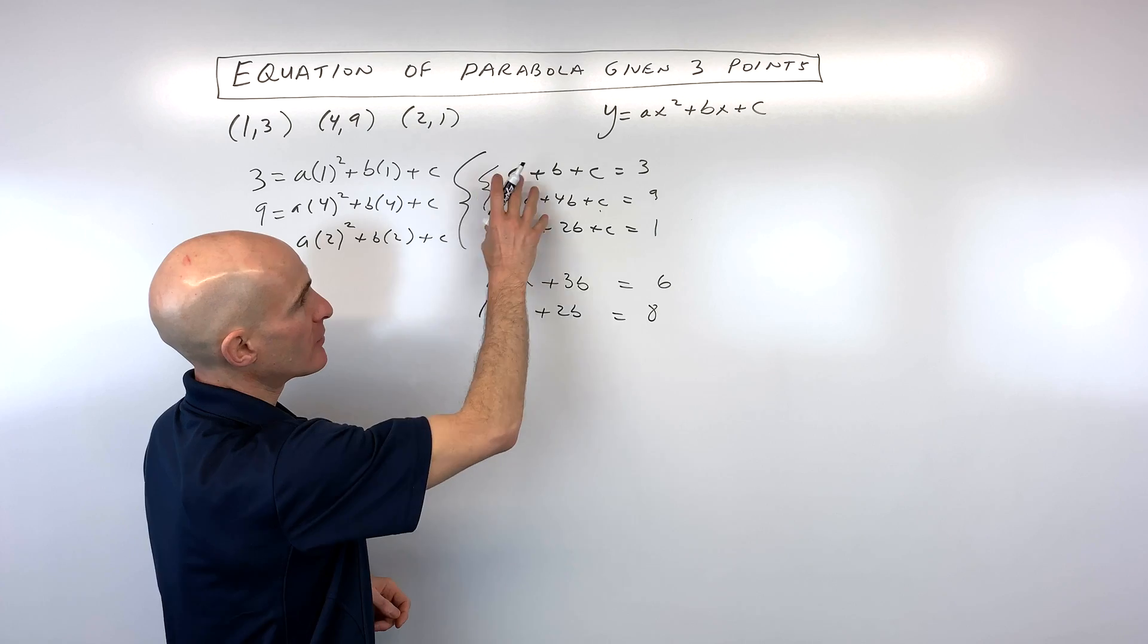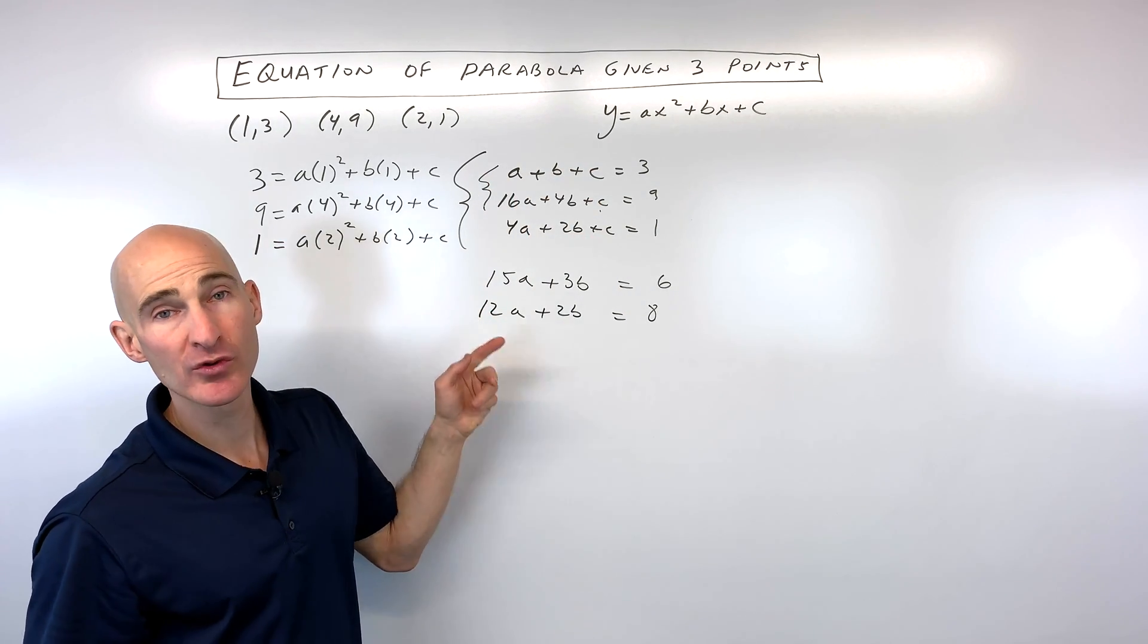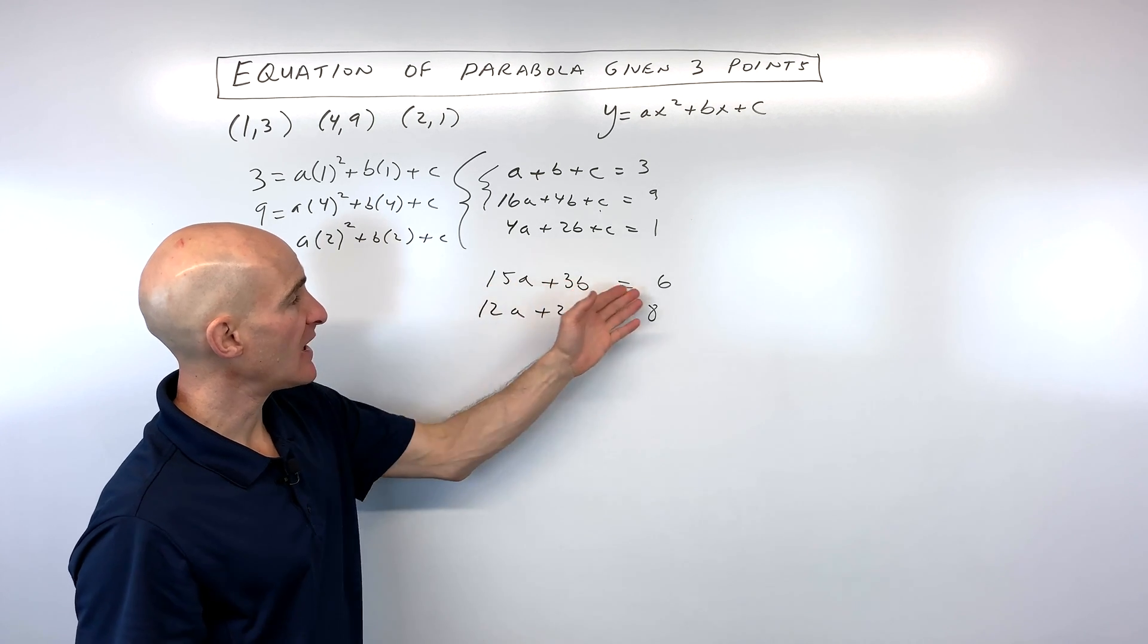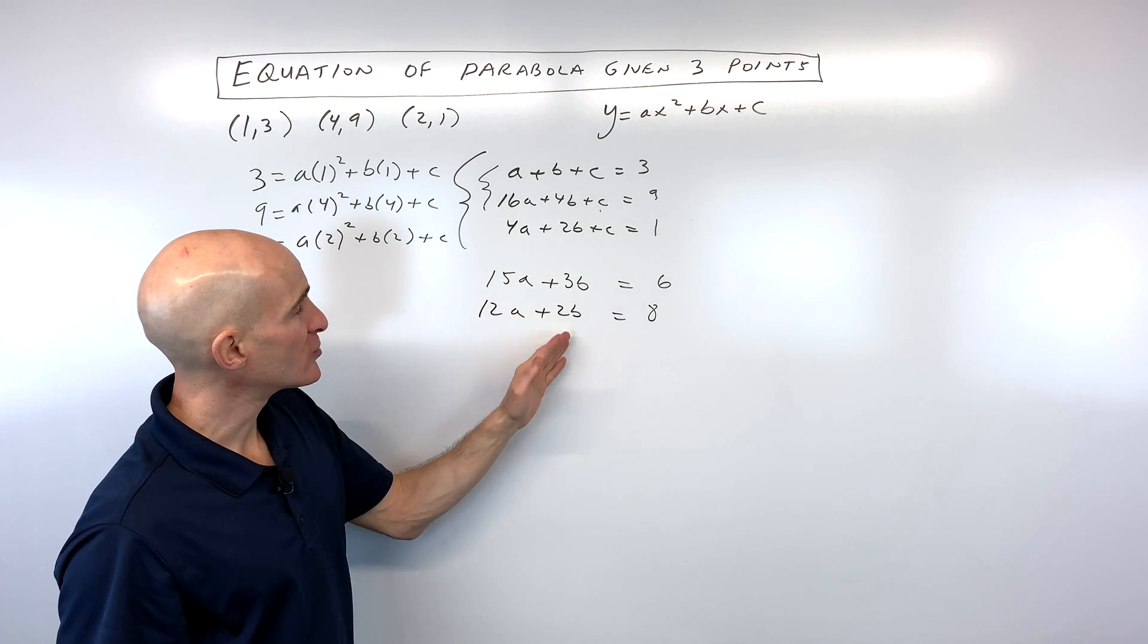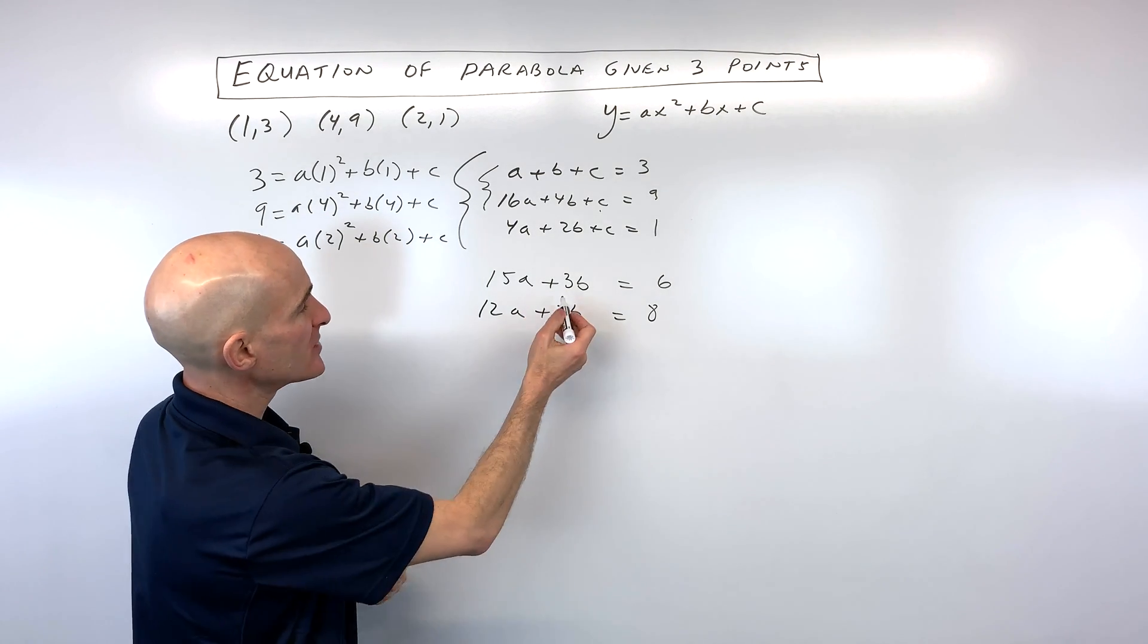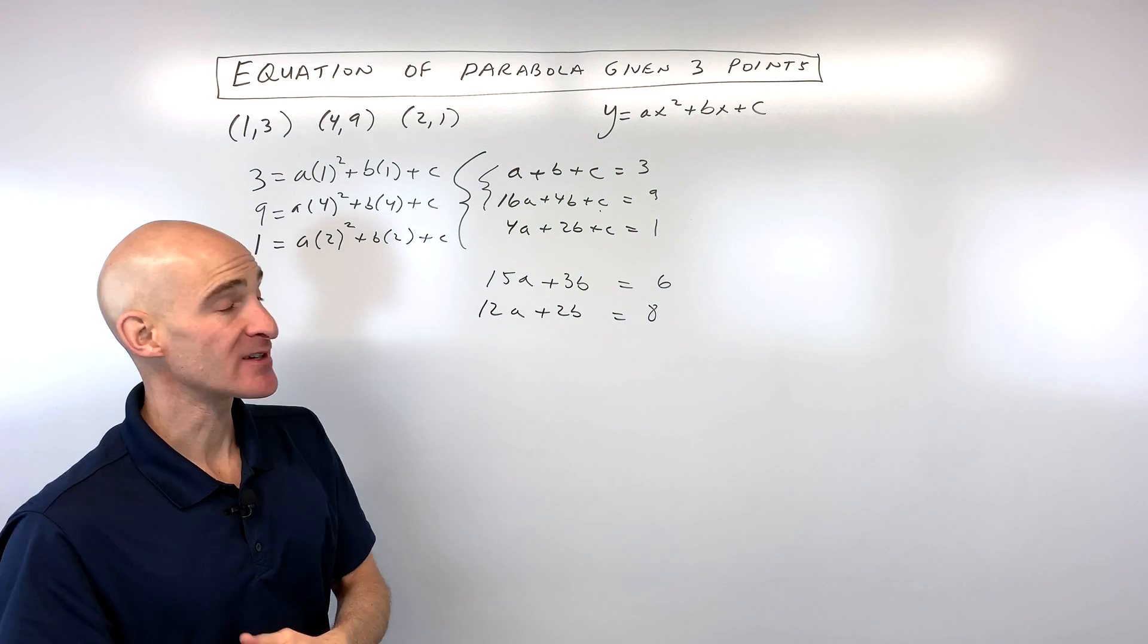So now you can see we've used all three equations. We eliminated the c's and now we're down to two variables, two equations. So all we have to do is solve this system, either eliminate the a's or the b's. Let's go ahead and try to eliminate the b's since these coefficients are a little bit smaller. So it looks like 3b and 2b, we could get a lowest common multiple of 6. They both go into 6.